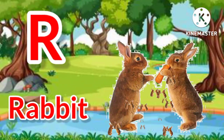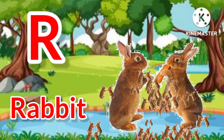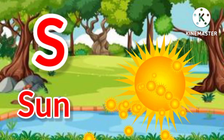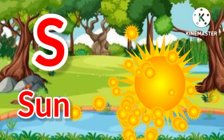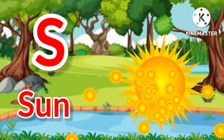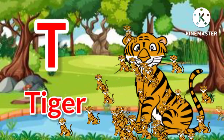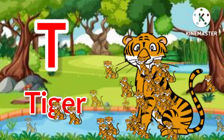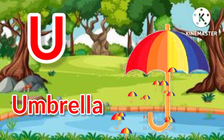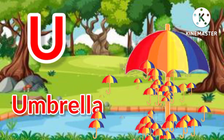R for rabbit, S for sun, T for tiger, U for umbrella.